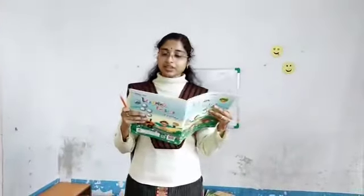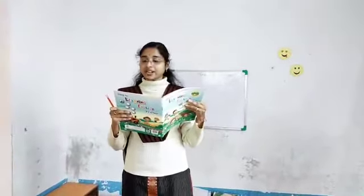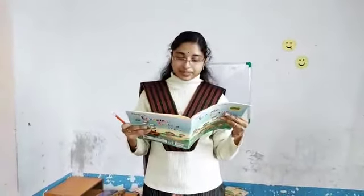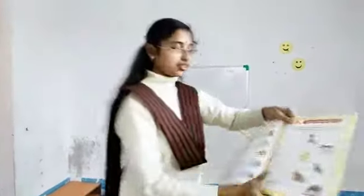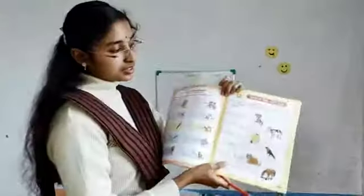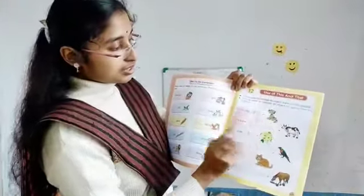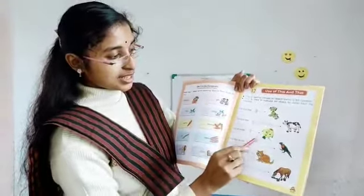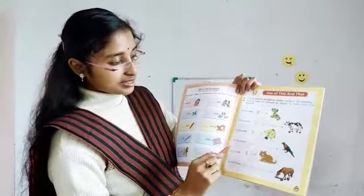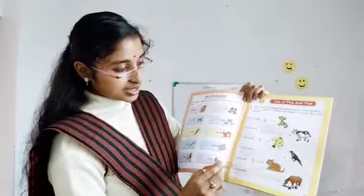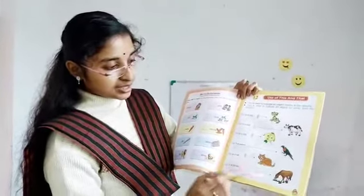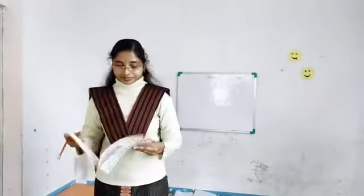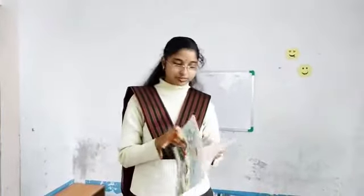That is used to indicate an object far away from the speaker. This is a dog. This is a dog. That is a cow. Okay. This is a kite. That is a parrot. This is a cat. That is a horse.